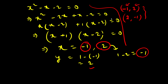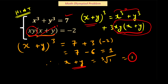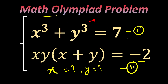So there are two pairs of solutions: x = -1, y = 2, or x = 2, y = -1. Finally, our answer is: first solution x = -1, y = 2; second solution x = 2, y = -1.